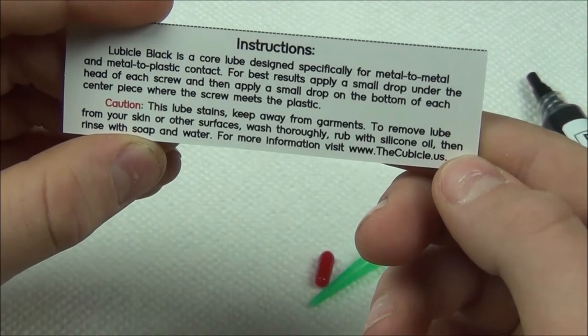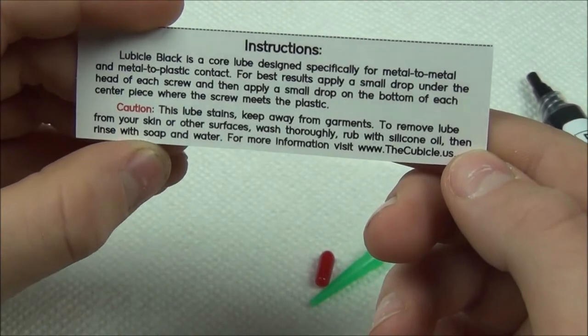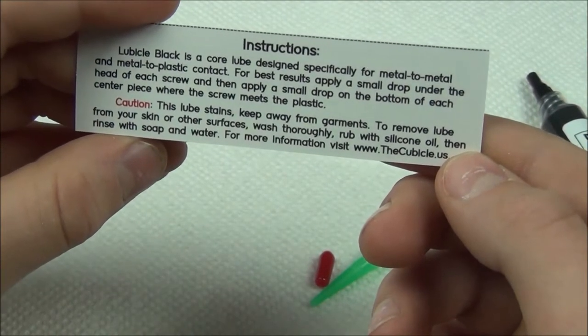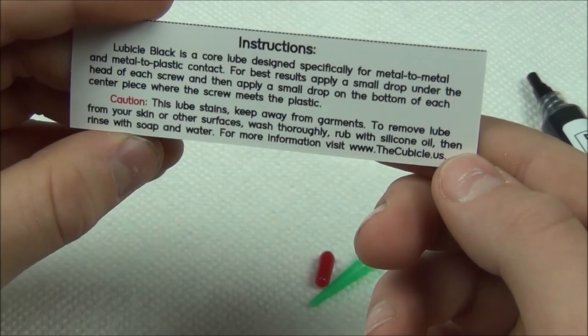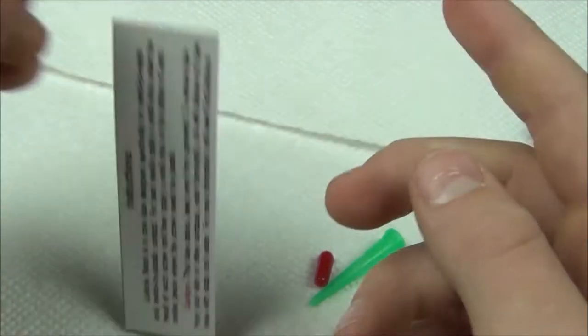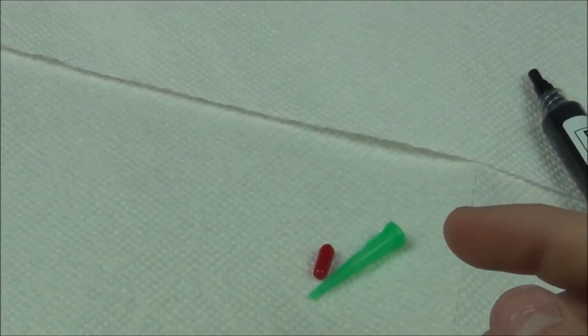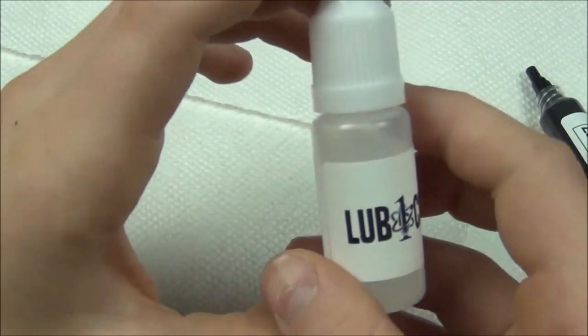Caution, the lube stains, keep away from garments. To remove lube from your skin or other surfaces, wash thoroughly, rub with silicone oil, then rinse with soap and water. Also another way you can wash Lubical Black off I've heard is to use Lubical Wand.